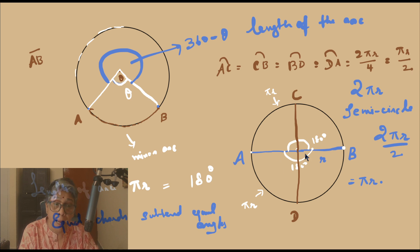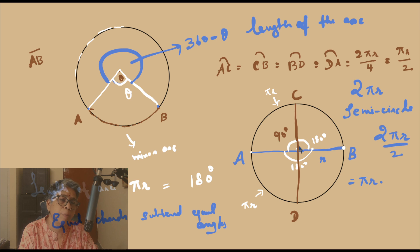And what would be the angle? The angle would be 90 degrees. As it is, we have taken perpendiculars, and it is also 180 divided by 2, or 360 divided by 4.